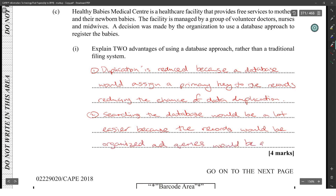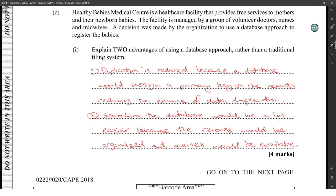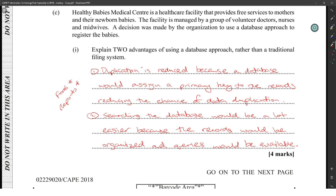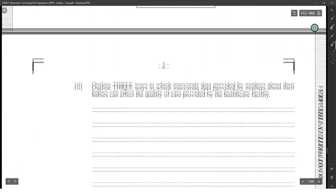We name-dropped queries, data duplication, and primary keys. You can also talk about forms and reports — when talking about databases, the key elements would normally be queries, forms, reports, and tables. When you talk about tables, primary keys would be a key point.